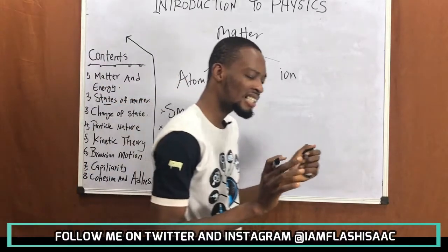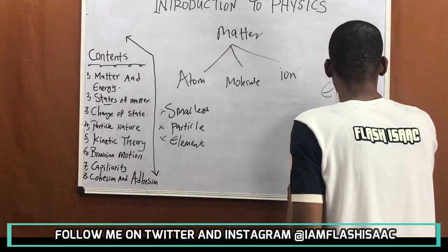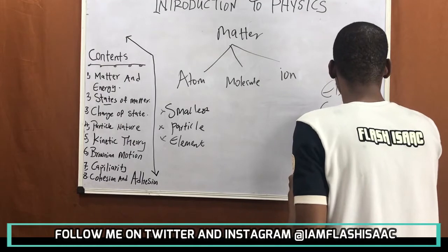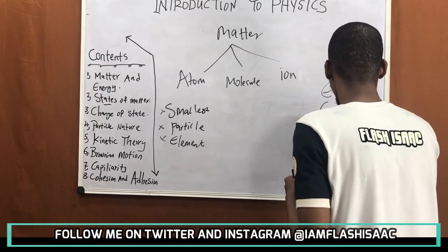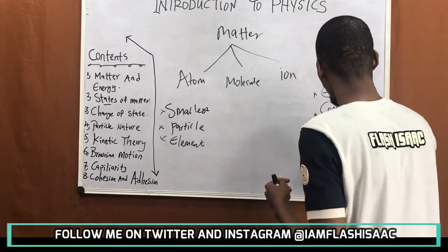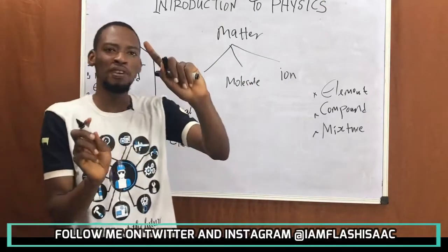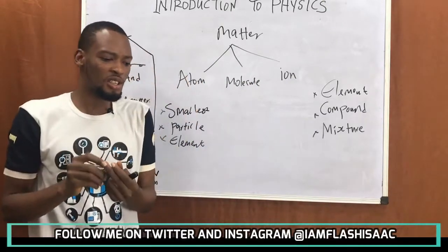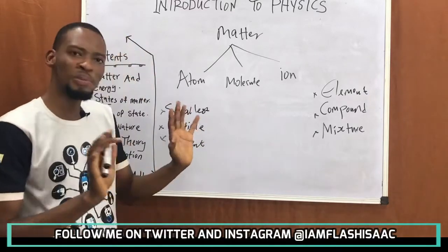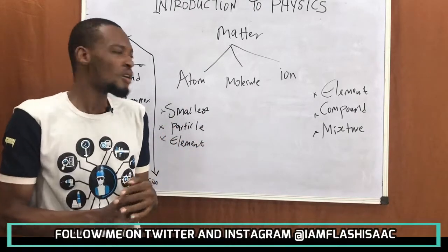Matter can exist as elements, compounds, and mixtures. An element is a substance that contains only one type of atom — it cannot be split into simpler form by any ordinary chemical method. So it contains one type of atom.